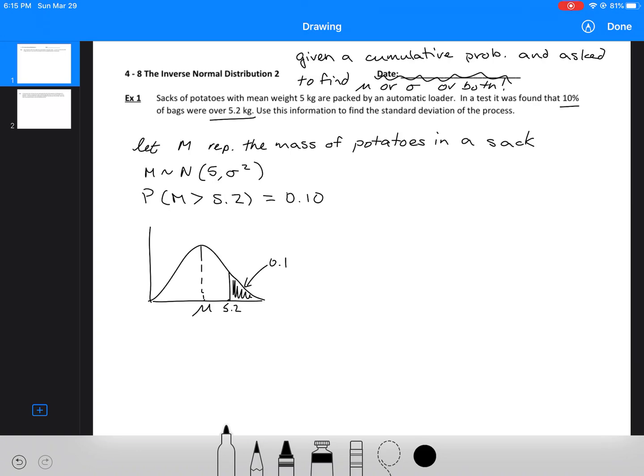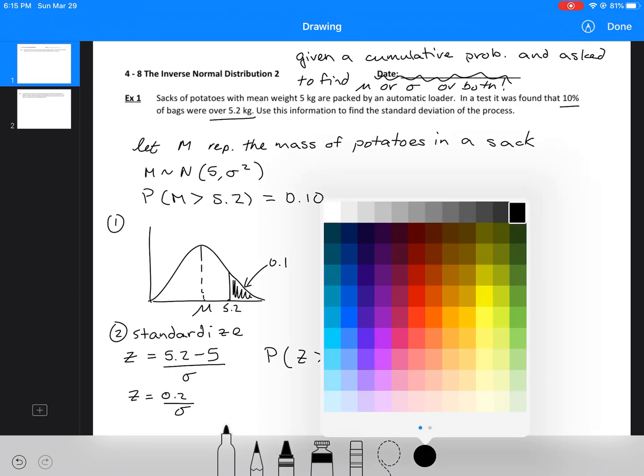Now because I don't know the standard deviation of this distribution, I'm going to standardize my variables. So shift everything to be on the standard normal distribution. I'm going to do that using the equation that's in my normal distribution video. So we've got z equals 5.2, my original x value, take away my mean and then divide it by the standard deviation. So here I get z equals 0.2 over sigma.